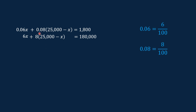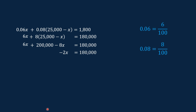Let us apply the distributive property of multiplication. So we have 6X plus 8 times 25,000 and then 8 times negative X, giving us 6X plus 200,000 minus 8X equals 180,000. Since 6X and negative 8X are like terms, we combine them to get negative 2X. Then we transpose 200,000 to the right side of the equation, changing its sign from positive to negative, giving us 180,000 minus 200,000, which equals negative 20,000.